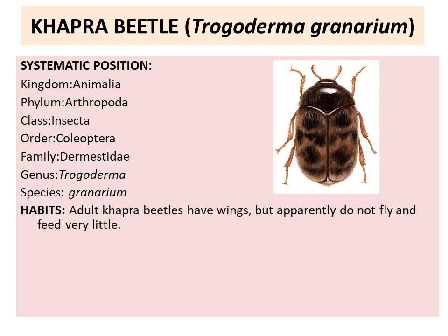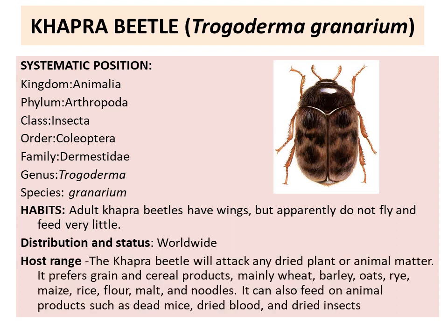Habits: Adult khapra beetle have wings but apparently do not fly and feed very little. Distribution and status: worldwide host range. The khapra beetle will attack only dried plant or animal matter. It prefers grain and cereal products — mainly wheat, barley, oat, rye, maize, rice, flour, malt and noodles. It can also feed on animal products such as dead mice, dried blood and dried insects.